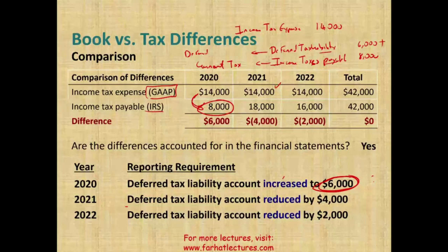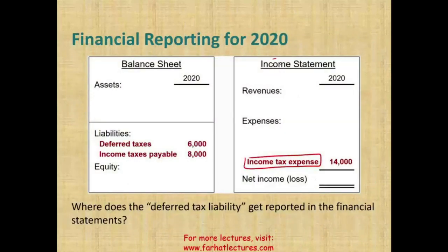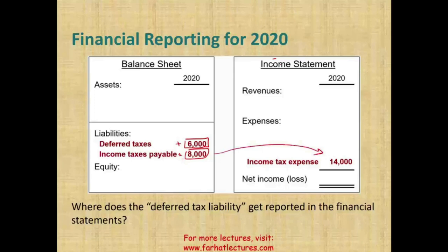Here's how things are reported on the income statement. First compute income taxes payable, then compute deferred taxes. Deferred tax liability plus income taxes payable gives income tax expense — the GAAP number. The $8,000 is the IRS number; the $6,000 is the difference. The deferred tax liability is reported on the balance sheet as a liability.